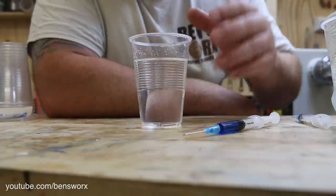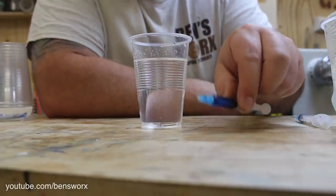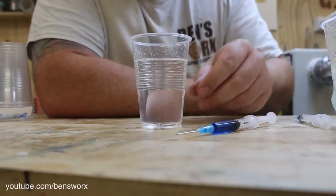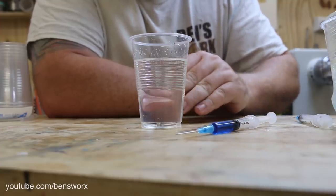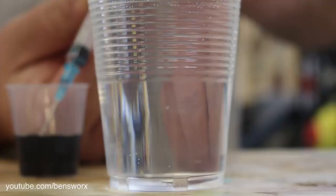Because we came so close to getting a result that time I'm going to try it again but this time instead of injecting the whole syringe full of water in I'm just going to do a little bit like a couple of drops and see if we can keep it in the middle. I found some of the black water that we used yesterday we'll be able to do one drop of blue and one drop of black.